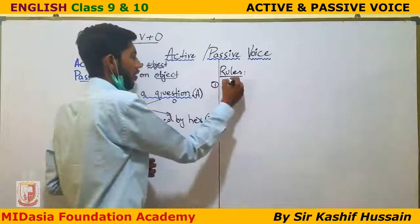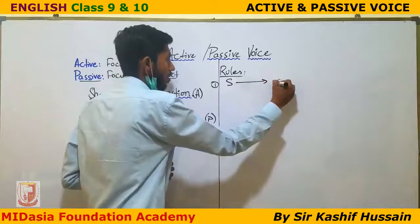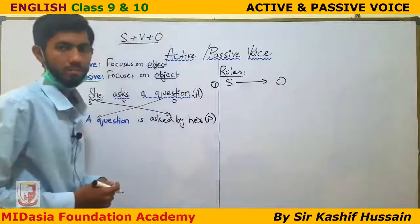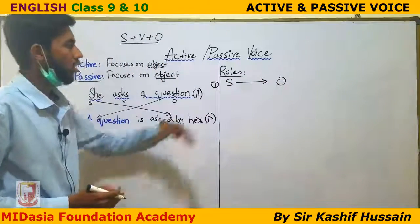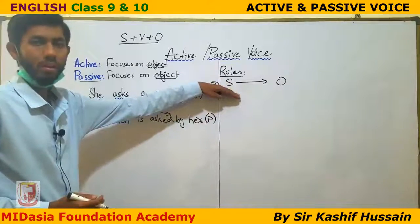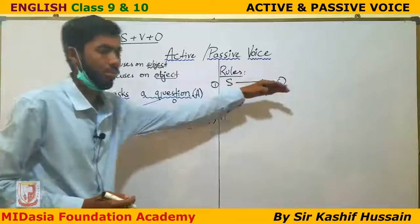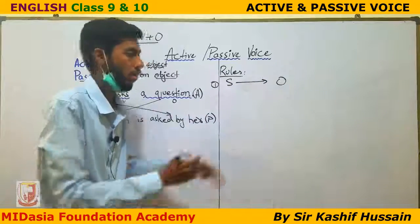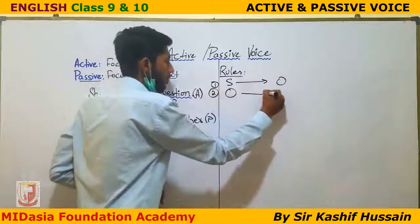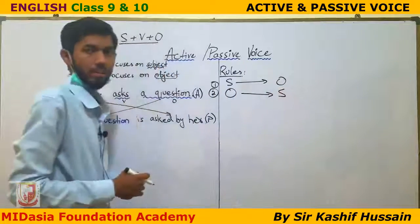Rule number 1: the subject should be changed into the object position. When we make passive voice, we take the subject and move it to the position of the object. Rule number 2: similarly, we take the object and move it to the position of the subject.